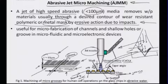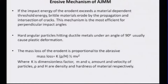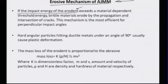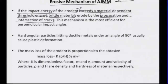Let us look at some other aspects of the erosive mechanism of the AJMM process. If the impact energy of the erodent exceeds the material-dependent threshold energy which binds the material — particularly for brittle materials — there is a propagation and intersection of cracks which result from this impact onto the surface of the material.